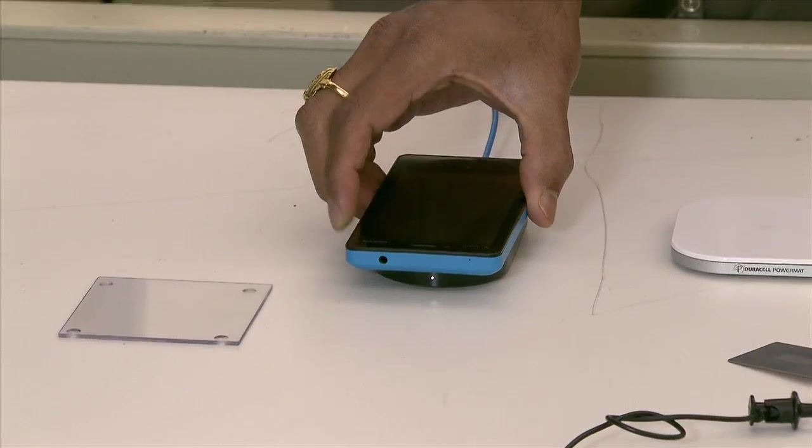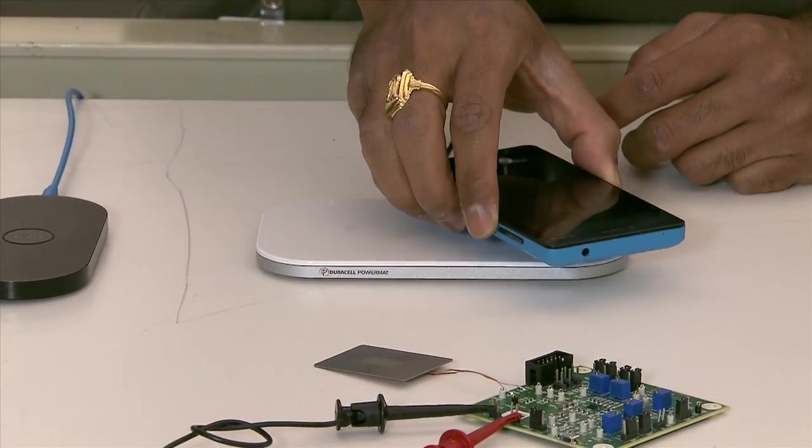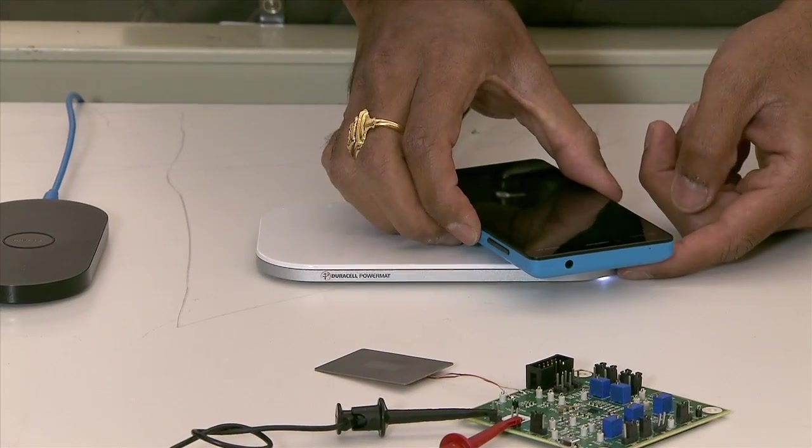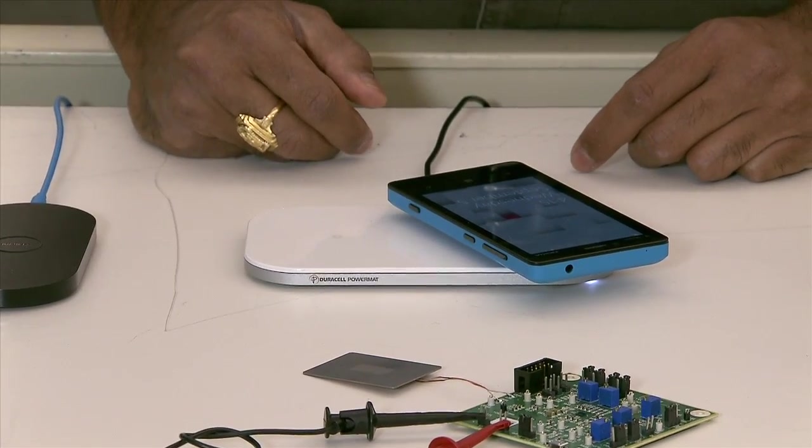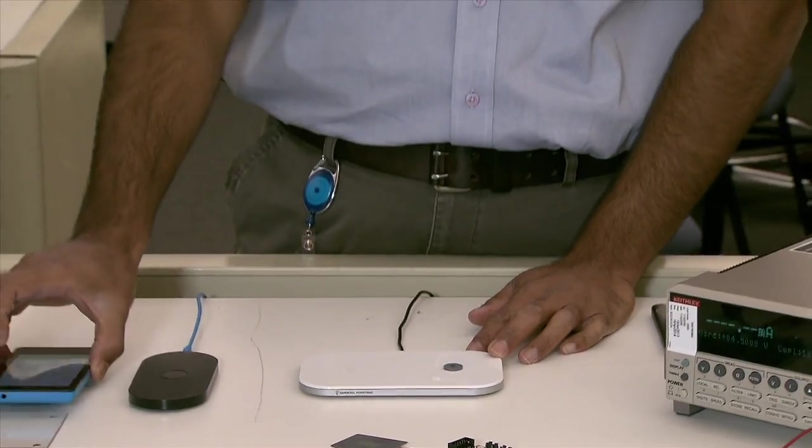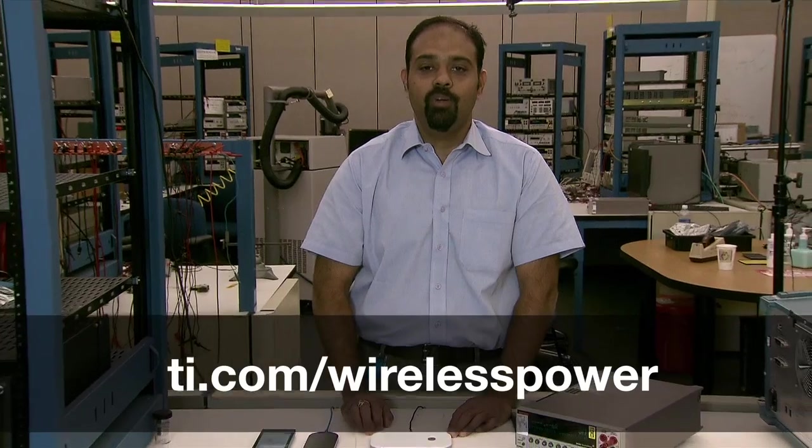The same phone I will now take and place on a PMA compliant transmitter will also come up and charge. As you can tell from the transmitter light and from the phone charging. This product will allow customers to create dual-mode solutions in the market in 2013 and 2014.